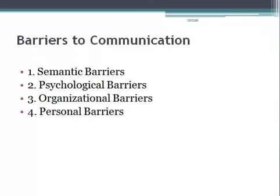Second are psychological barriers — emotional or psychological factors act as barriers. The state of mind of both sender and receiver affects effective communication. A worried person cannot communicate properly and an angry recipient cannot understand the message properly. Both sender and receiver need to be psychologically sound and should trust each other; if they don't believe each other, they cannot understand each other's message in its original sense.